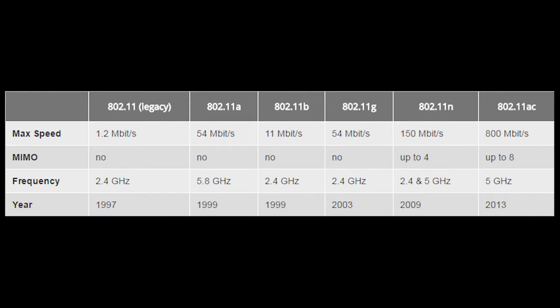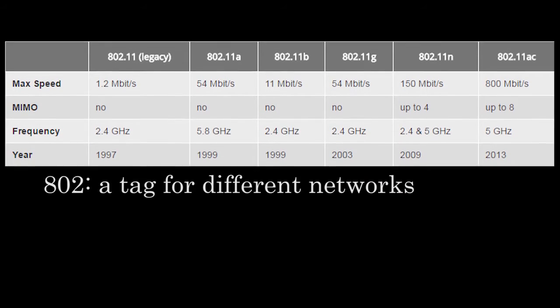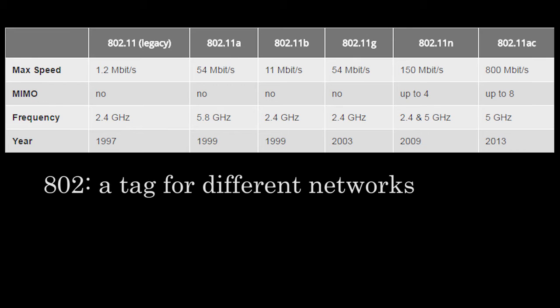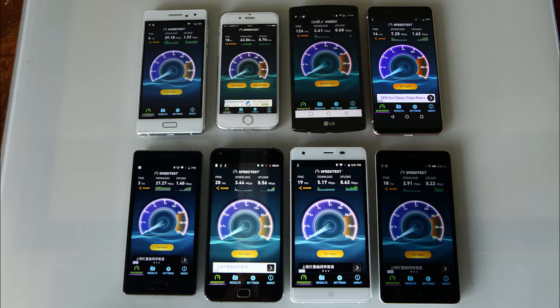Check out this form. Despite the weird-looking number 802, which is just a tag for different networks, you only need to know that 802.11 is only for WiFi. All the WiFi varieties are named with 802.11 at the beginning, followed by a letter or two. When you purchase a smartphone, you probably see something like this on the spec sheet. Let's break down the different WiFi versions and do a little comparison.